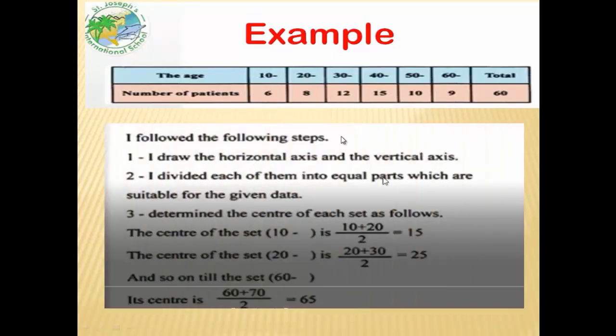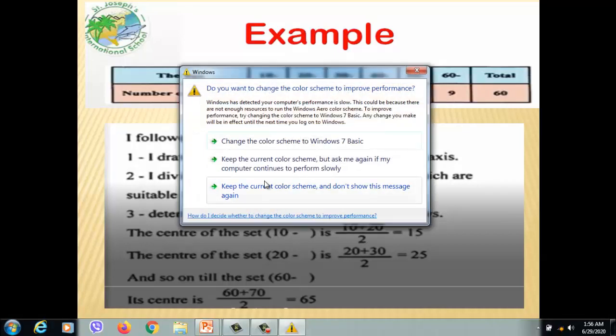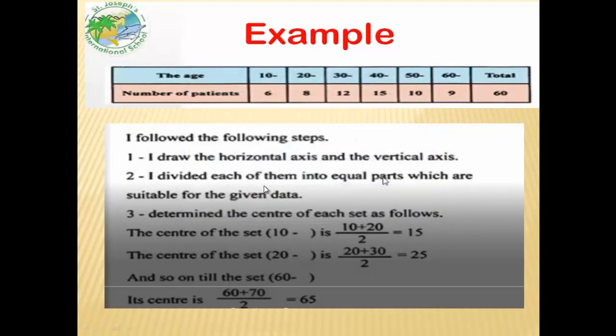Follow the following steps: First step, draw the horizontal axis and vertical axis. Number two, divide each of them into equal parts which are suitable for the given data. Step three, determine the center of each set as follows. The center of set - this we started in the last lesson. We can calculate the center of set as lower limit plus upper limit over 2.